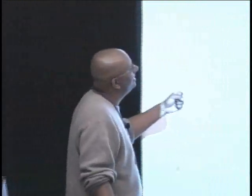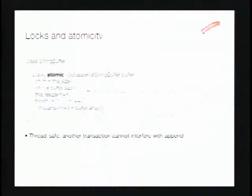If we use atomic instead, we're leaving it up to the implementation to figure out what to protect, and it's going to protect everything that's accessed. So another transaction can't go ahead and alter the parameter we're passing in. This code is thread safe.